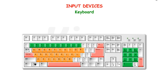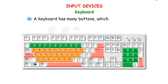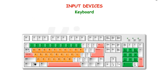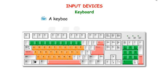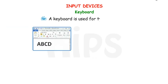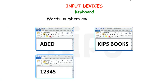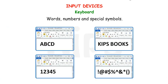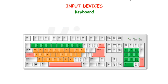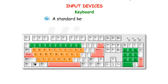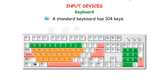Keyboard. A keyboard has many buttons which are called keys. A keyboard is used for typing letters, words, numbers and special symbols. A standard keyboard has 104 keys.